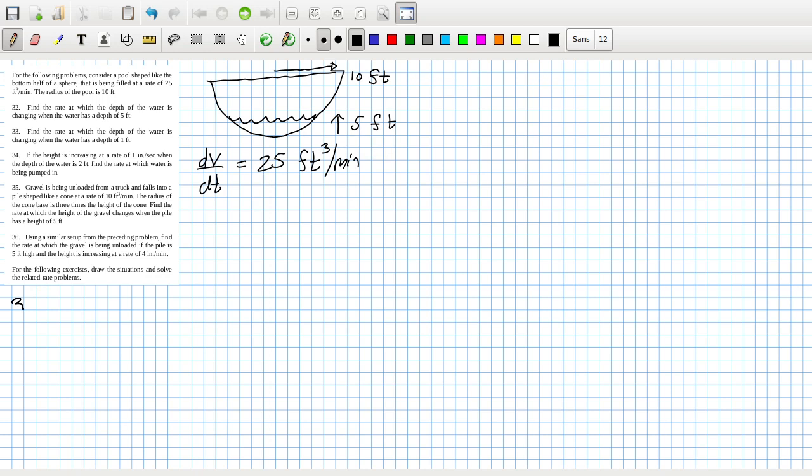So that's problem 32. Find the rate of dh/dt - find the rate at which the depth of the water is changing. dh/dt is going to be dh/dV times dV/dt. So that's 25 divided by dV/dh. So I need a formula for the volume here given the h. It's not quite a hemisphere, so again I'll need to look up the formula.